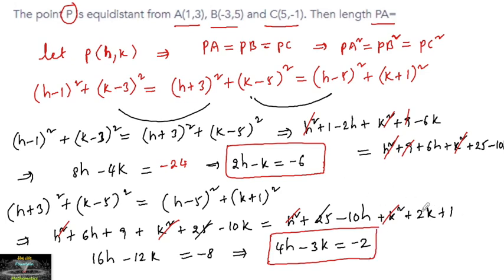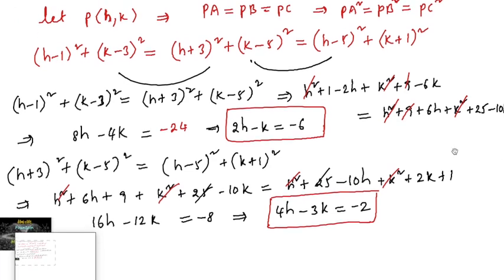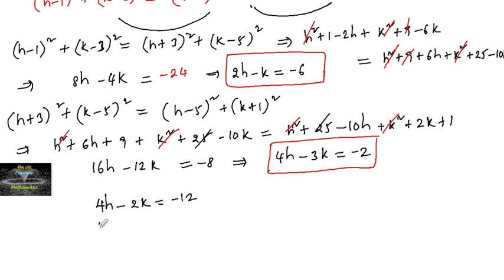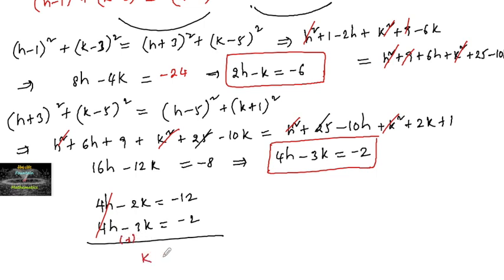Taking these two equations together, multiply equation one by 2: 4h − 2k = −12. The second equation is 4h − 3k = −2. Subtracting, we get k = −10.